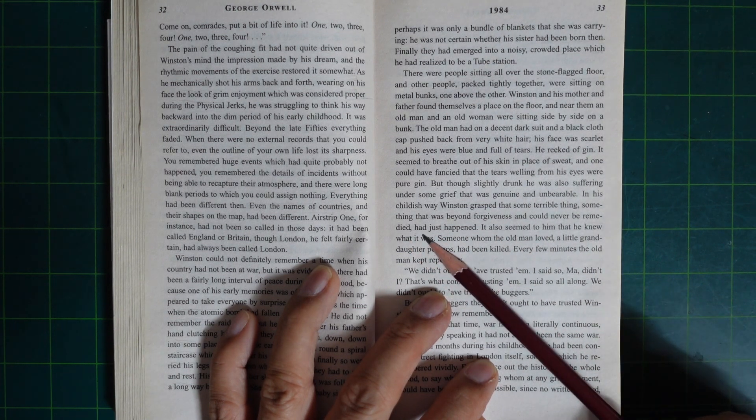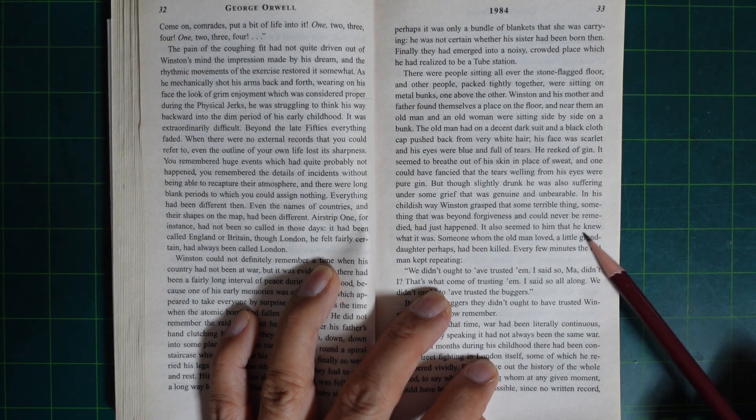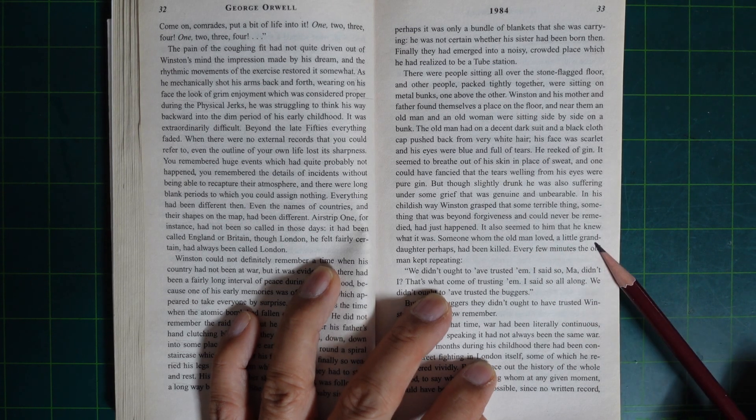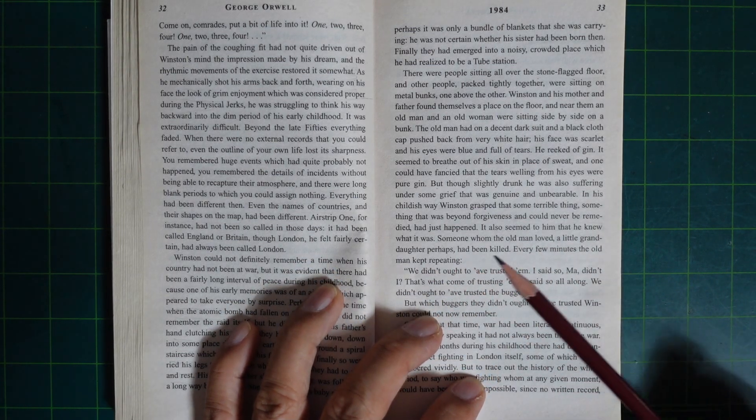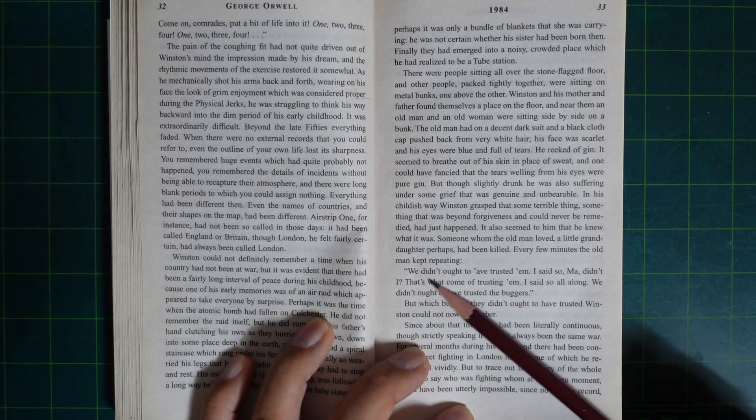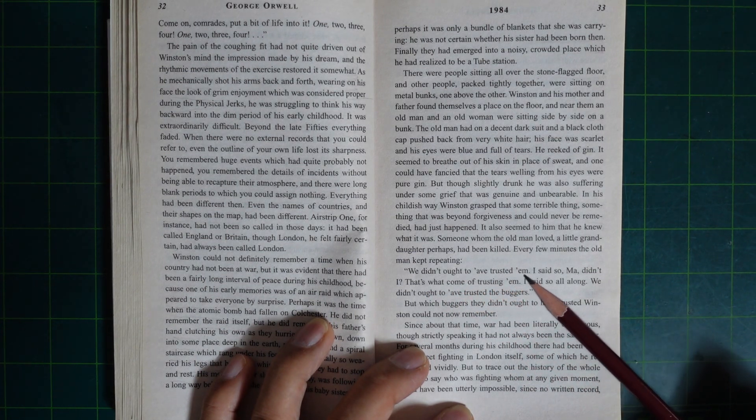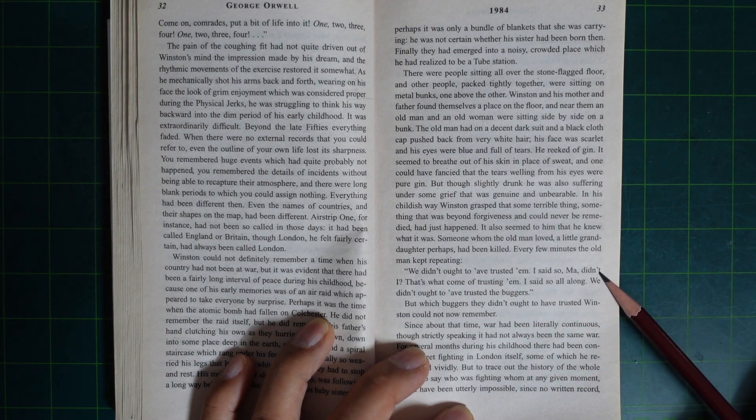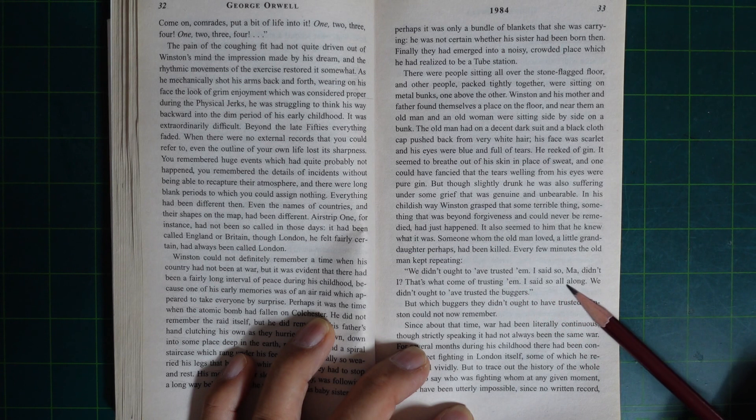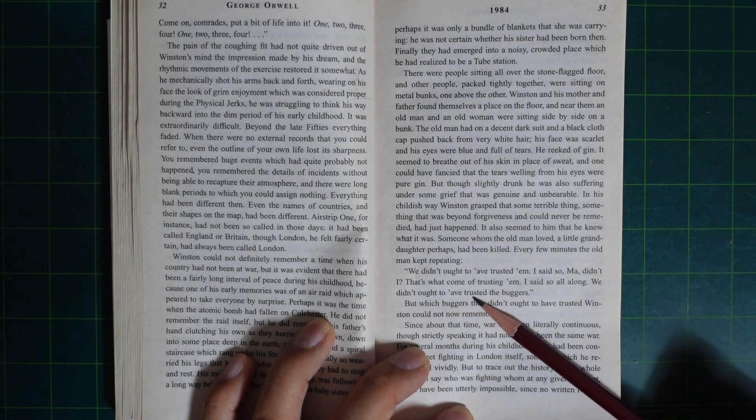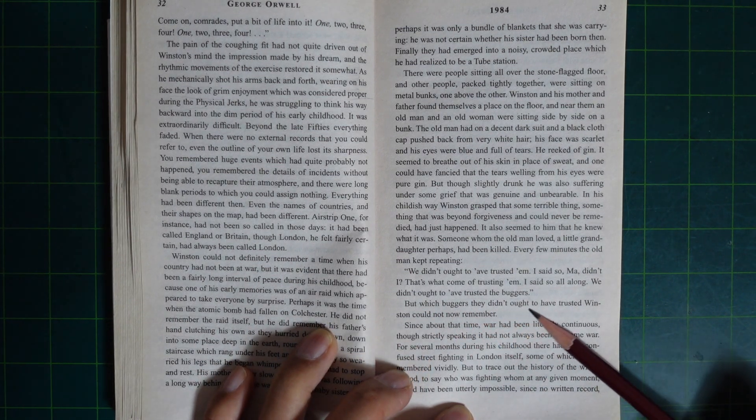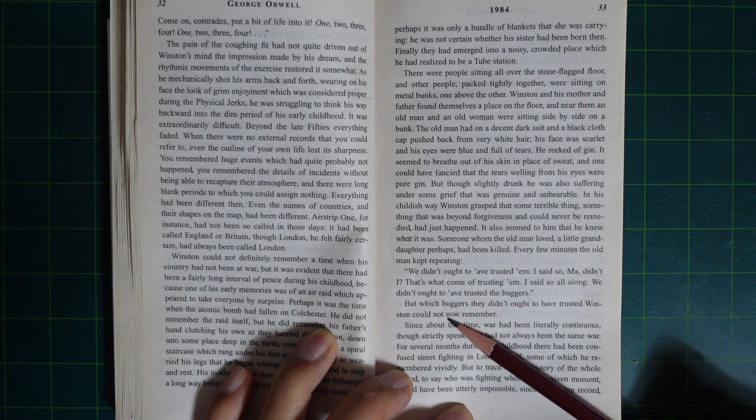It seemed to him that he knew exactly what it was. Someone whom the old man loved, a little granddaughter perhaps, had been killed. Every few minutes, the old man kept repeating, 'We didn't ought to have trusted him. We didn't ought to have trusted him. I said so, Ma, didn't I? That's what comes of trusting him. I'm so old.' We didn't ought to have trusted the buggers. But which buggers they didn't ought to have trusted, Winston could not now remember.